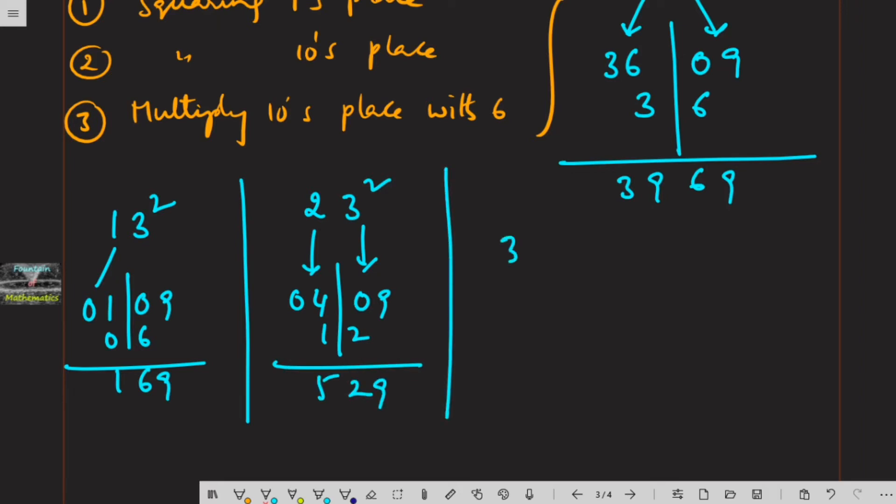Next, 33 square: 3 square is 9, and 3 square is 9, and 3 times 6 is 18. So we can give the answer 1,089 for 33 square.